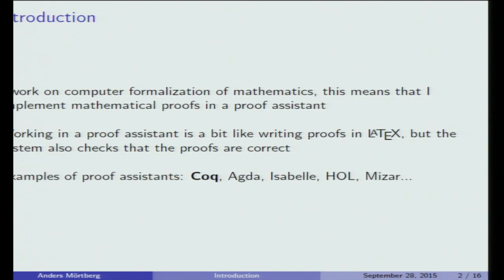I'm working on computer formalization of mathematics, which means that we implement proofs in a proof assistant. This is a bit like writing the proof in LaTeX, but the system also checks that the proof is correct for you — it tells you if you miss a case, and you interact with the system. There are many different examples of proof assistants, and we are working mostly with a proof assistant called COQ.